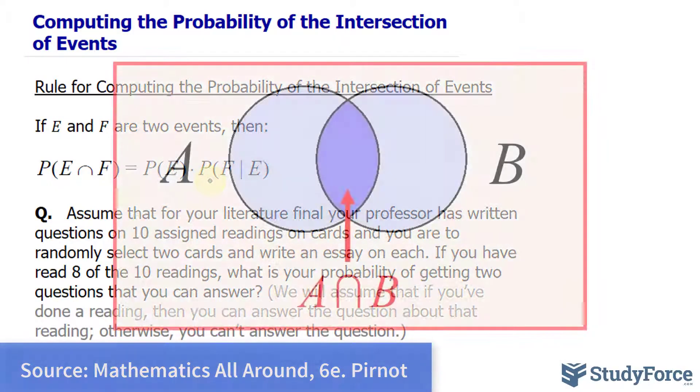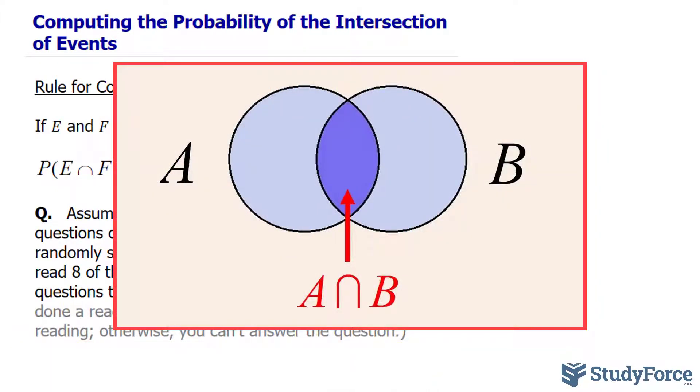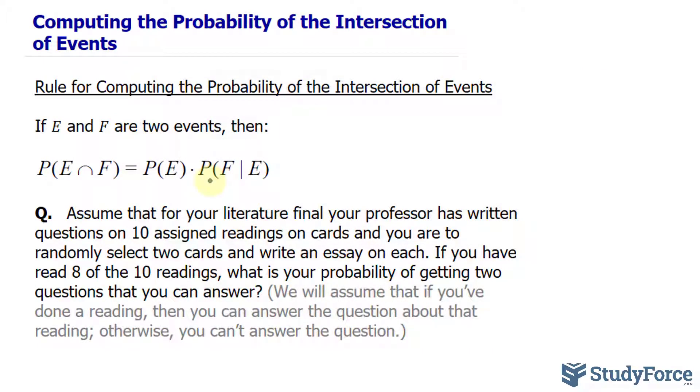If we want to visualize the intersection of two events, a Venn diagram is shown on your screen. It is that shaded region where they're both in common. So to learn this topic, let's look at a question.